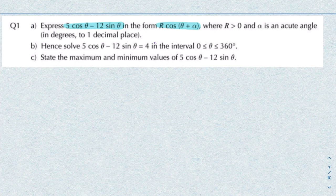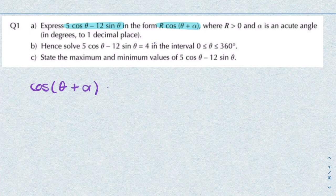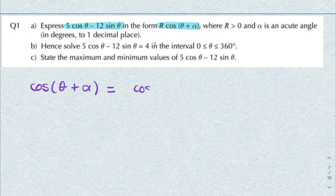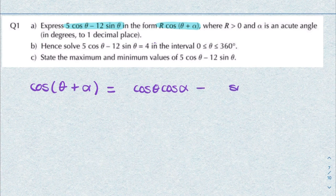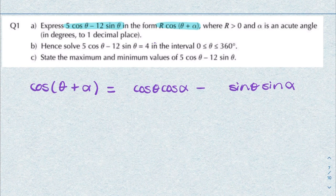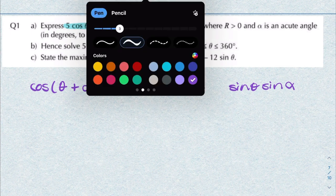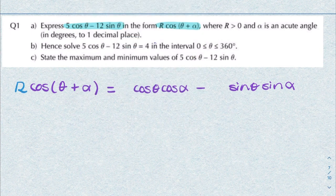Using the cosine sum of angles rule, we can say cosine theta plus alpha equals cosine theta cosine alpha minus sine theta sine alpha.